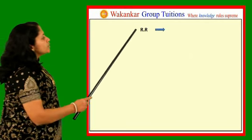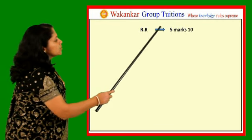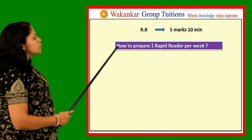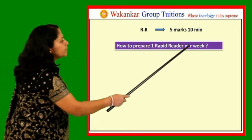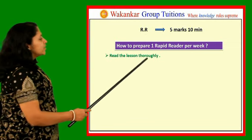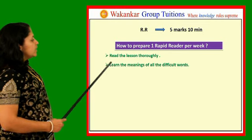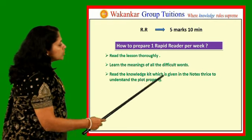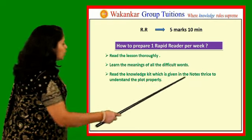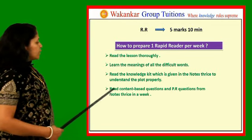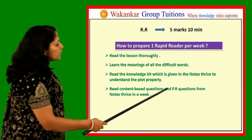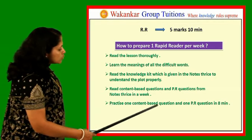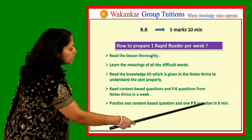Now let us see what is there for the rapid reading section. Rapid reading section carries 5 marks; you should complete it in 10 minutes. Here you get 1 comprehension passage. How to prepare 1 rapid reader per week: read the lesson thoroughly to know the plot, learn the meanings of all the difficult words, read the knowledge kit given in the notes thrice to understand the plot properly, read content-based questions and PR questions from notes thrice in a week. Practice 1 content-based question and 1 PR question in 8 minutes.